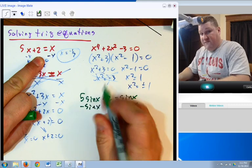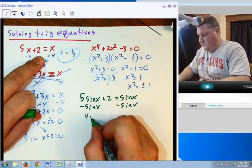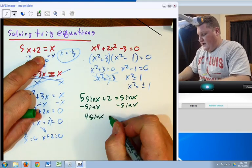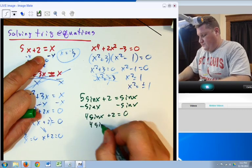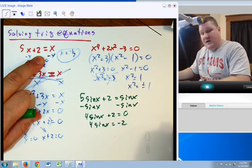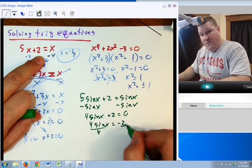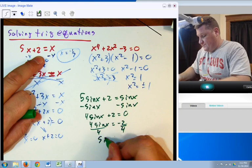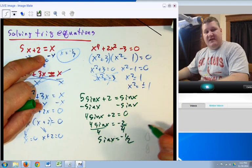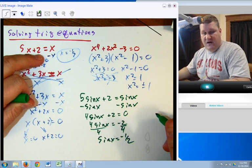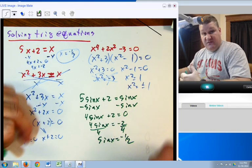I have 5 sin x minus 1 sin x is 4 sin x plus 2 equals 0. Move the two across, and it works out. Divide both sides by 4 because it is a constant. 5 sin x equals negative 1 half. Now, at this point, this is where we go back to last chapter, and we actually have to finish solving this.